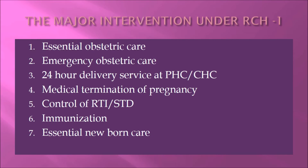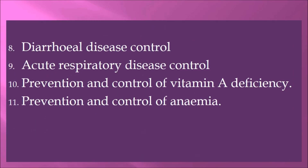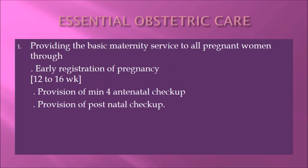Major interventions under Phase 1 include: essential obstetric care, emergency obstetric care, 24-hour delivery service at PHC and CHC, medical termination of pregnancy, control of reproductive tract infections and sexually transmitted diseases, immunization, essential newborn care, control of acute respiratory disease, and prevention and control of Vitamin A deficiency and anemia.